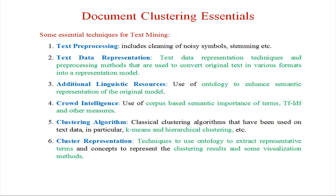Document clustering essentials: the essential techniques for text mining. First is text preprocessing — removing noisy symbols, cleaning the data, and in some cases filtering sentences, meaning we separately identify sentences in the document. Second is text data representation. Third is the use of additional linguistic resources, specifically ontology to enhance the semantic representation. Fourth is crowd intelligence — the use of purpose-based semantic importance of terms like TF-IDF and other measures.